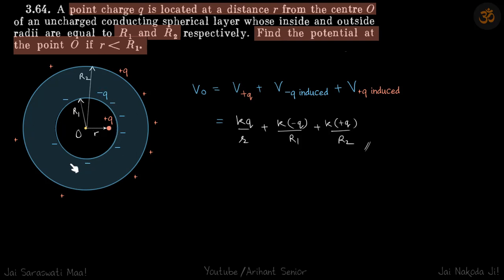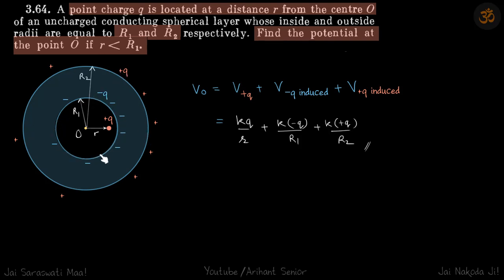First, as we've seen with Gauss's law, the charge on the inside surface will be minus q (since the enclosed charge is plus q), and on the outermost surface it will be again plus q. This is the charge distribution that occurs in the conductor due to the induction effect.